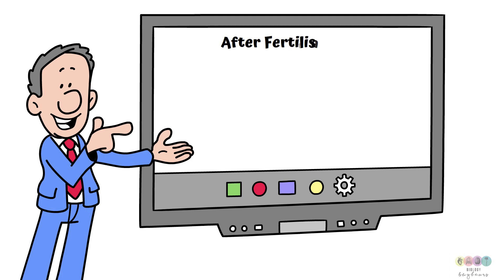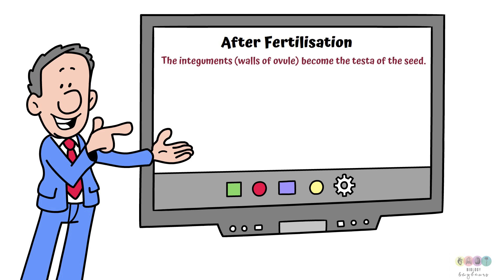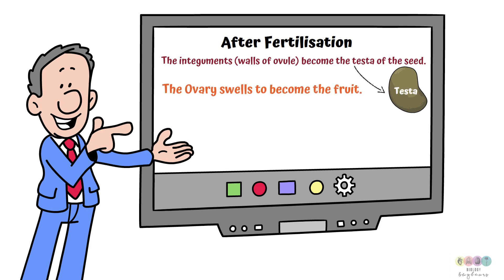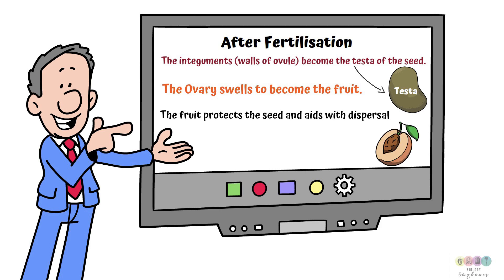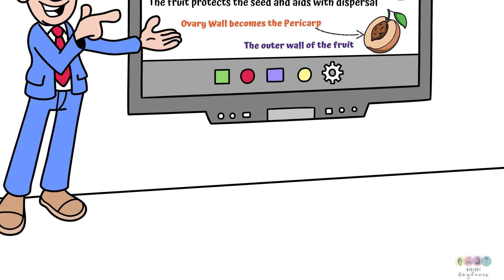You are often asked what happens after fertilisation to the parts of the flower. The integuments, the walls of the ovule, become the testa — the tough outer coating of the seed. The ovary swells to become the fruit, and the role of the fruit is to protect the seed and to aid with its dispersal. The ovary wall becomes the pericarp, which is the outer wall of the fruit.